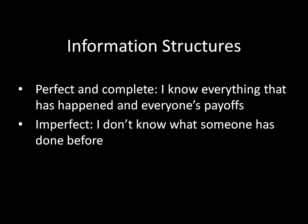A second type of informational structure that we've analyzed is imperfect information, but complete information. These are cases where I don't know what someone else has done before, but I do know what everyone's payoffs are. We actually covered this type of game in the first unit of this course. The prisoner's dilemma is an example of this.